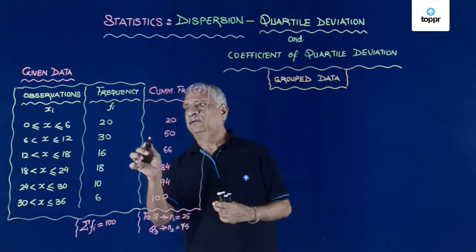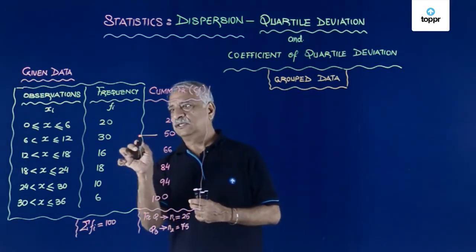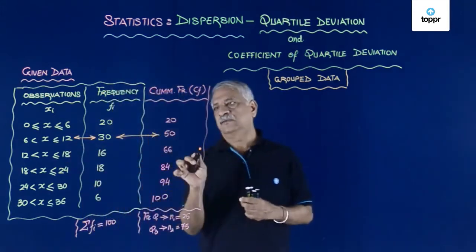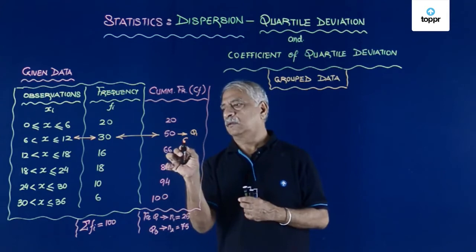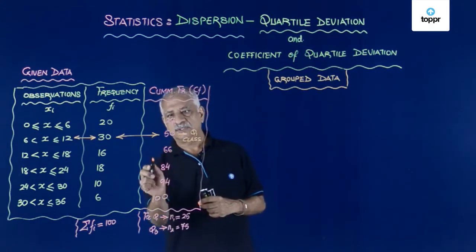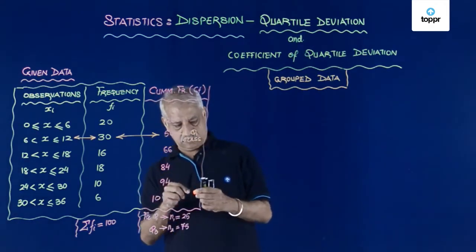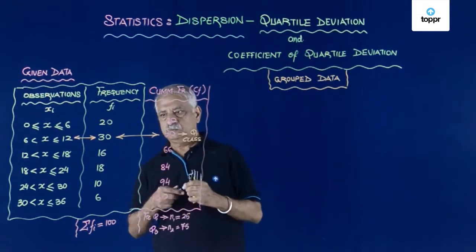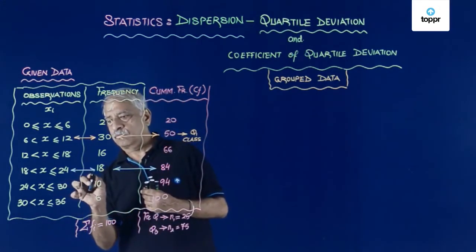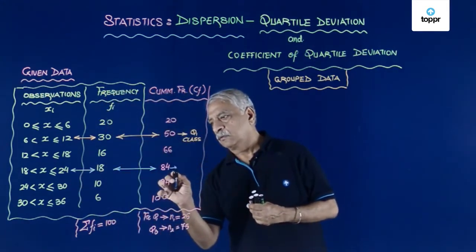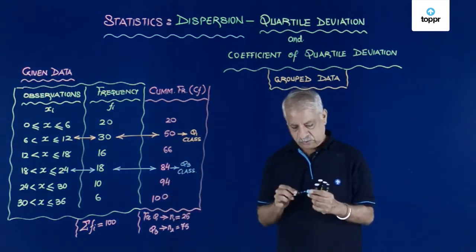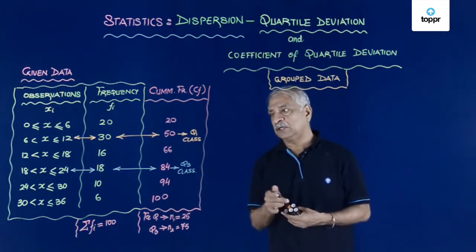So for 25, yes, my this becomes the quartile class. And for 75, about 66 and this 84, so this gives me Q3 class. From these we find out the quartiles Q1 and Q3.